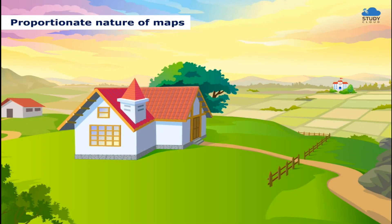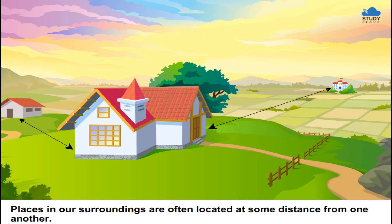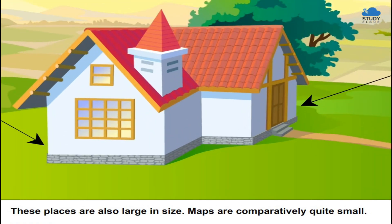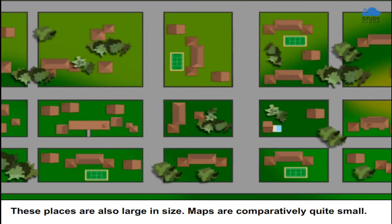Proportionate Nature of Maps. Places in our surroundings are often located at some distance from one another. These places are also large in size. Maps are comparatively quite small.